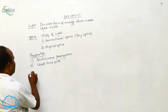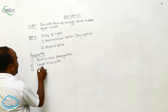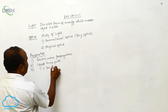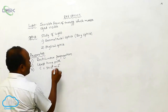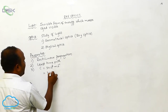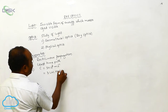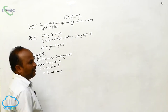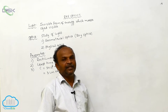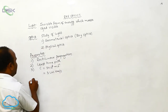Next, what is the speed of light? The speed of light is 3 × 10⁸ meters per second, or otherwise 3 lakh kilometers per second.